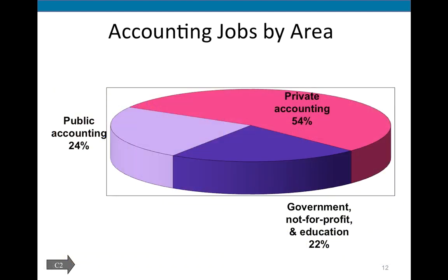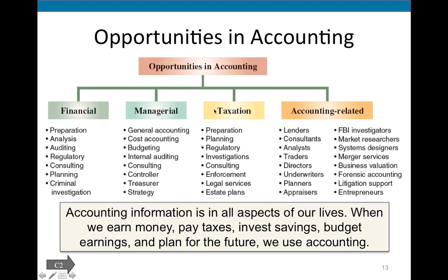There are three large areas in which accountants are employed. Public accounting means you work for a CPA firm, which is hired by other businesses to do audits, taxes, and set up accounting systems. Private accounting means you work in a company's own accounting department, such as Nike or Alphabet. There's also a large group where accountants are needed in nonprofit, education, and government — employed by the IRS, FBI, universities, school districts, hospitals, sports teams, theaters, and museums.